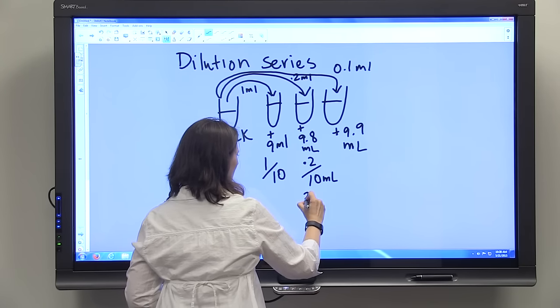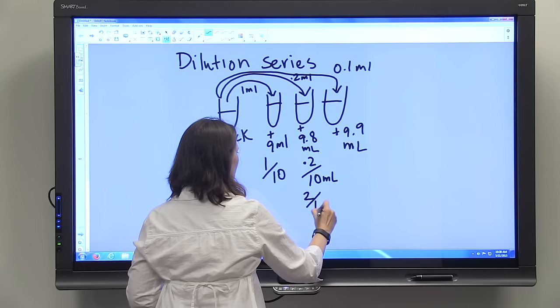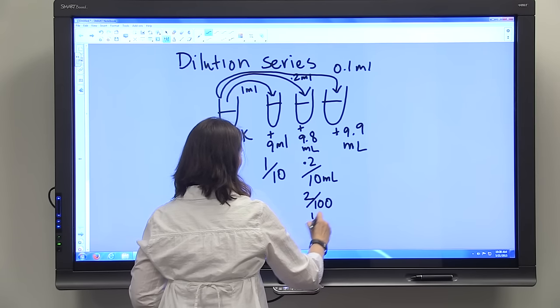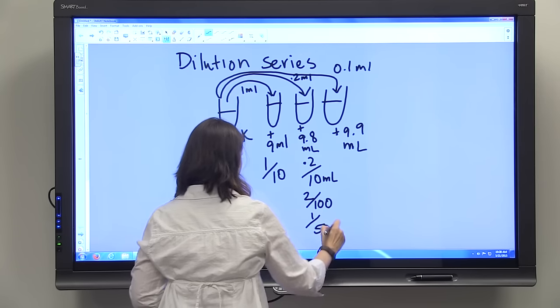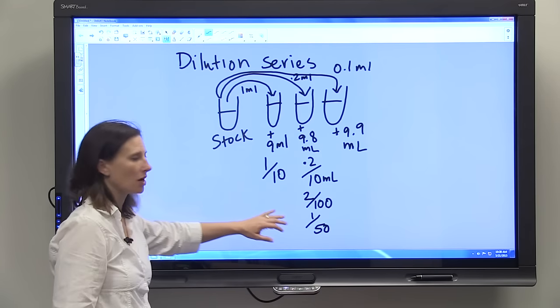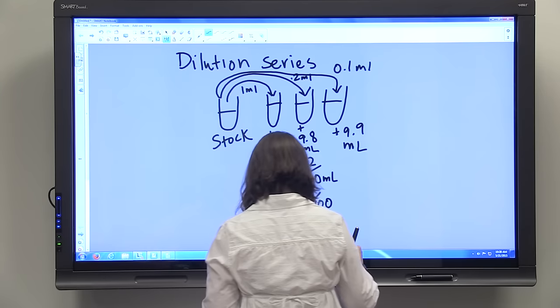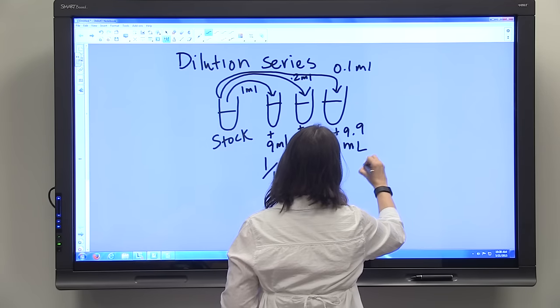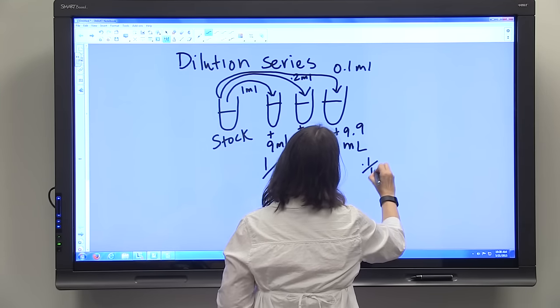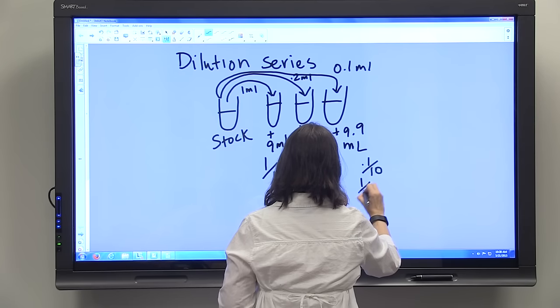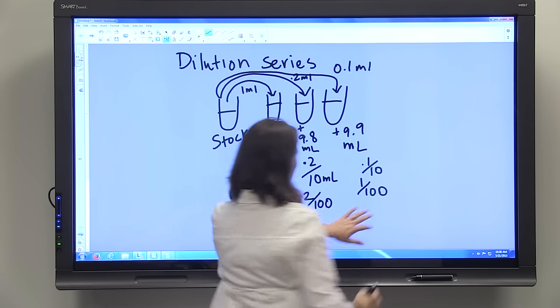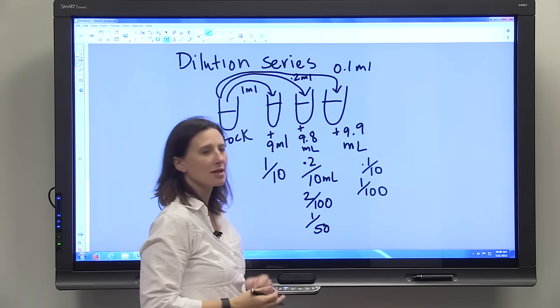So we can also look at that by moving the decimal point, 2 out of 100 or 1 out of 50. So that gives us a fiftieth dilution. That's our dilution factor there. And here again 0.1 out of 10 is 1 out of 100. That's our dilution factor for this third test tube.